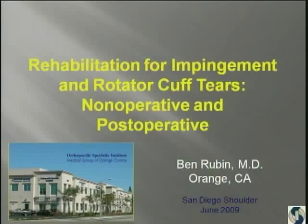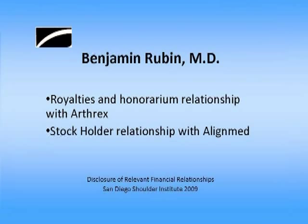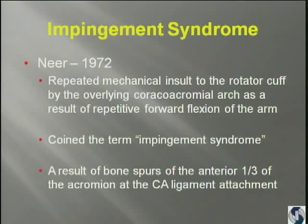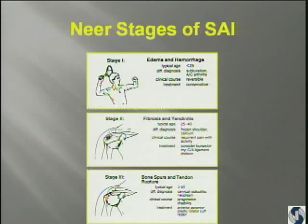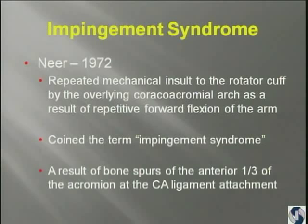Let's talk about impingement and rotator cuff tears and how we rehabilitate patients. Neer initially coined the term impingement syndrome, talking about the repeated mechanical insult to the rotator cuff by the coracoacromial arch. He said this was a result of bone spurs in the anterior third of the acromion at the CA ligament attachment.